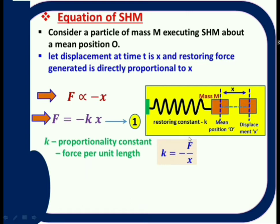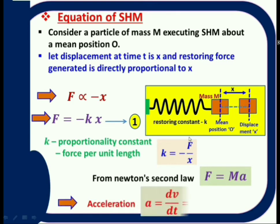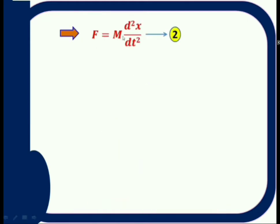So equation one is F = minus kx. According to Newton's second law, F = ma, where a is acceleration. Acceleration is the rate of change of velocity, dv/dt. Velocity is the rate of change of displacement, dx/dt. So acceleration can be written as d²x/dt². Therefore, according to Newton's second law, F = m·d²x/dt². This is equation two.